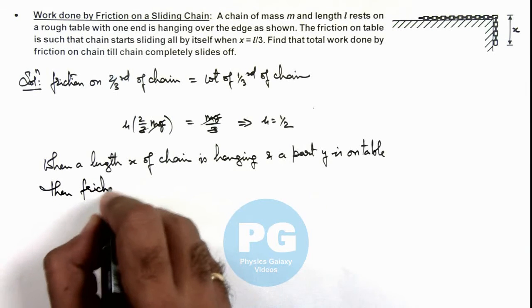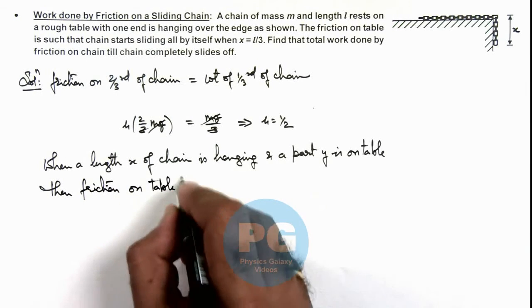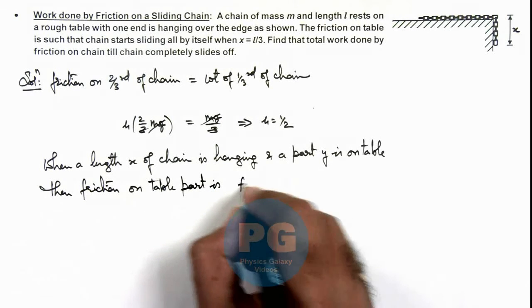Then friction on table part of chain is, this friction we can write.